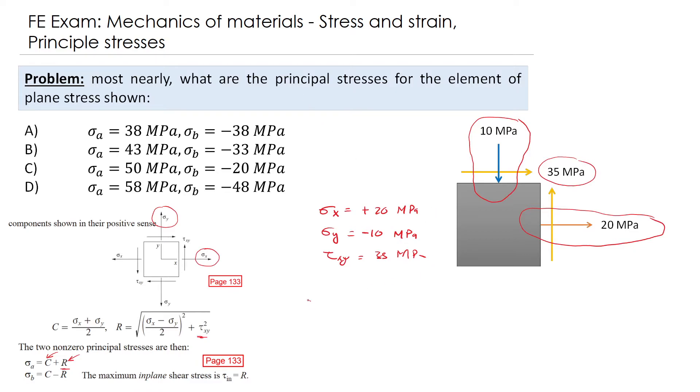C equals sigma x plus sigma y divided by 2. So sigma x is plus 20 plus negative 10 divided by 2. That is 20 minus 10 divided by 2, which is 5 mega Pascal.